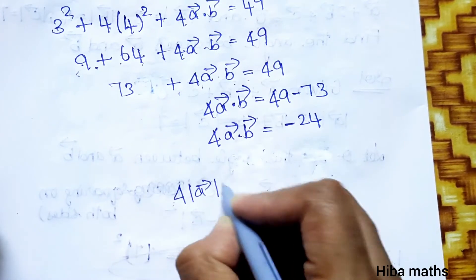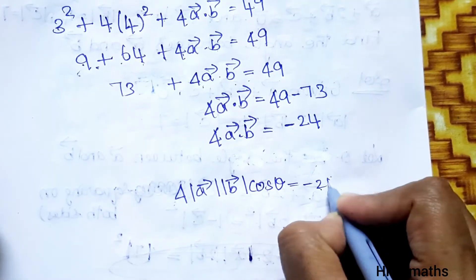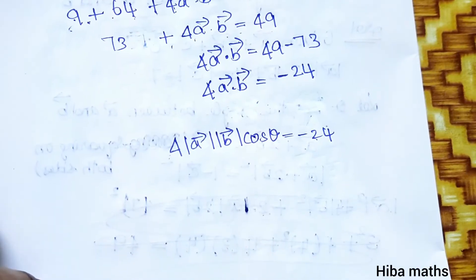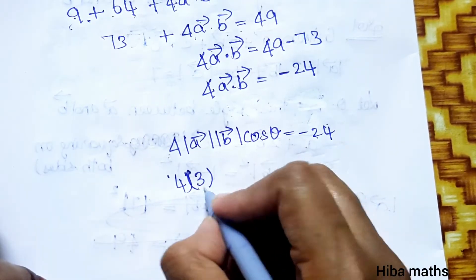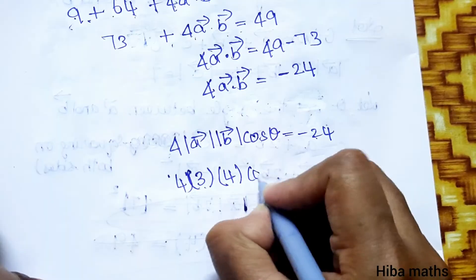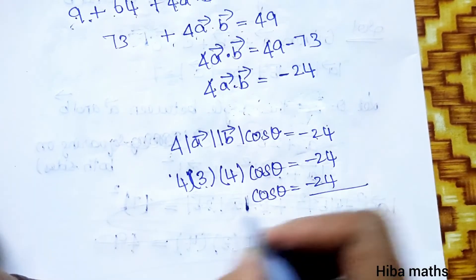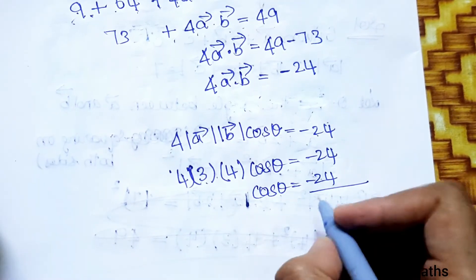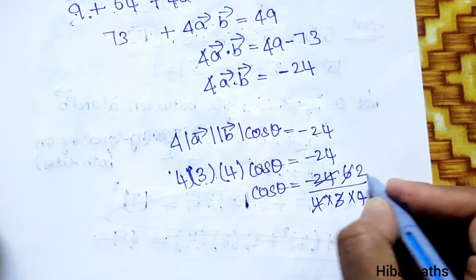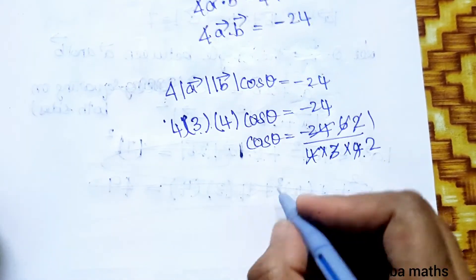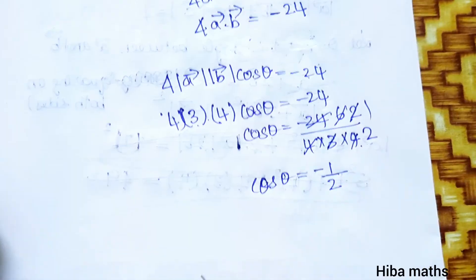Now, 4 into a vector dot b vector equals 4 into modulus of a times modulus of b times cos theta. Substituting: 4 times 3 times 4 times cos theta equals minus 24. So 48 cos theta equals minus 24. Therefore cos theta equals minus 24 divided by 48, which equals minus 1 by 2.